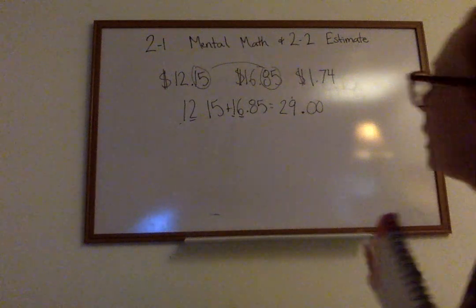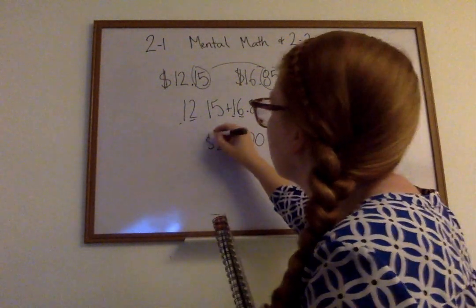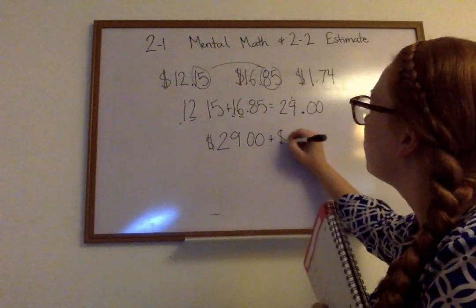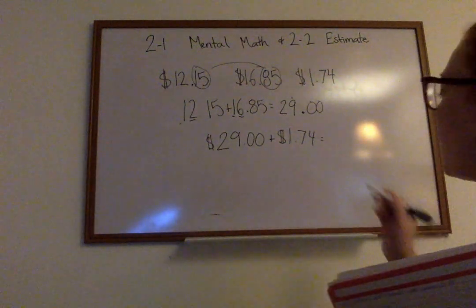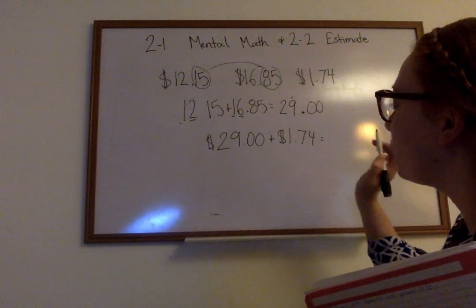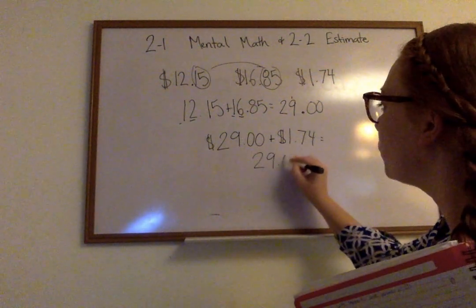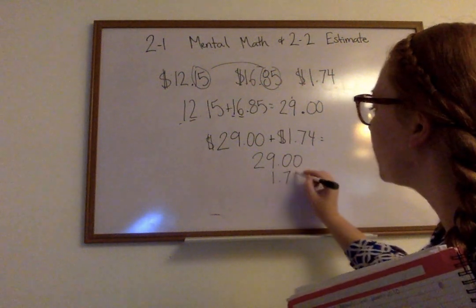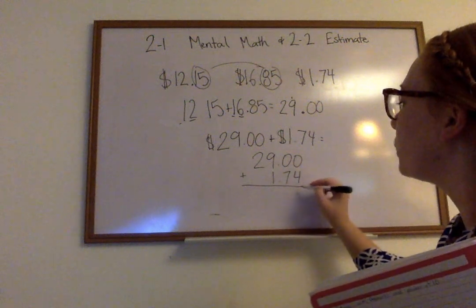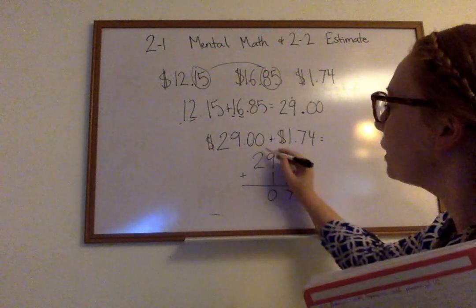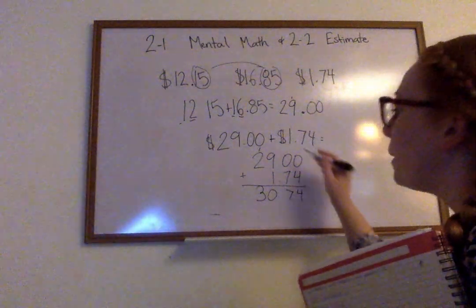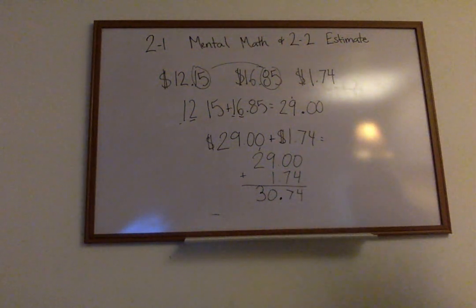I need to add the $1.74 to it now. So now I have my $29 plus my $1.74 and I'm going to add it right up. I'm going to add up my... I could do two things. Stacking them on top of each other would be the safest way to add it up so I know I don't make any mistakes. So let's do that. 0 plus 4 is 4. 0 plus 7 is 7. 9 plus 1 would be 10. Carry my 1. 2 plus 1 is 3. My decimal comes all the way down and I plug it right on in. So then my answer would be $30.74. That's an example of a good test question that there might be on the test.